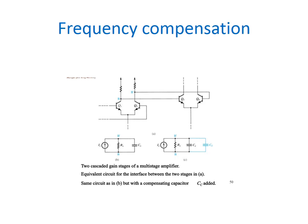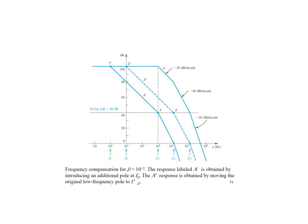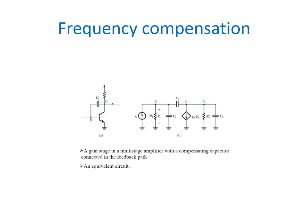This is the multi-stage, two cascaded multi-stage amplifier and its corresponding equivalent circuit. In the corresponding equivalent circuit, we are going to include compensating capacitor CC. This is the frequency compensation represented for beta equal to 10 power minus 2. Here, the response A dash is obtained by adding a pole at FD. Similarly, A double dash response is obtained by moving low frequency pole at F dash. Here in the multi-stage amplifier, we are including compensating capacitor in the feedback path and corresponding equivalence.